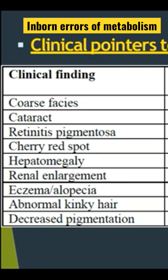Hepatosplenomegaly, especially if the liver is very firm, we need to think about storage disorders like glycogen storage disorder, and also sometimes urea cycle diseases. Hydronephrosis and renal cysts can be found in Zellweger syndrome, as well as biotinidase enzyme deficiency.